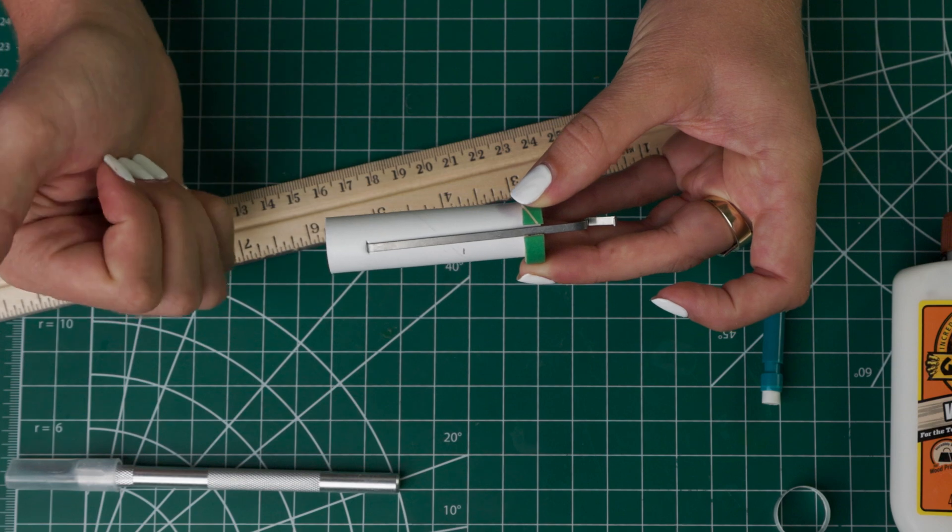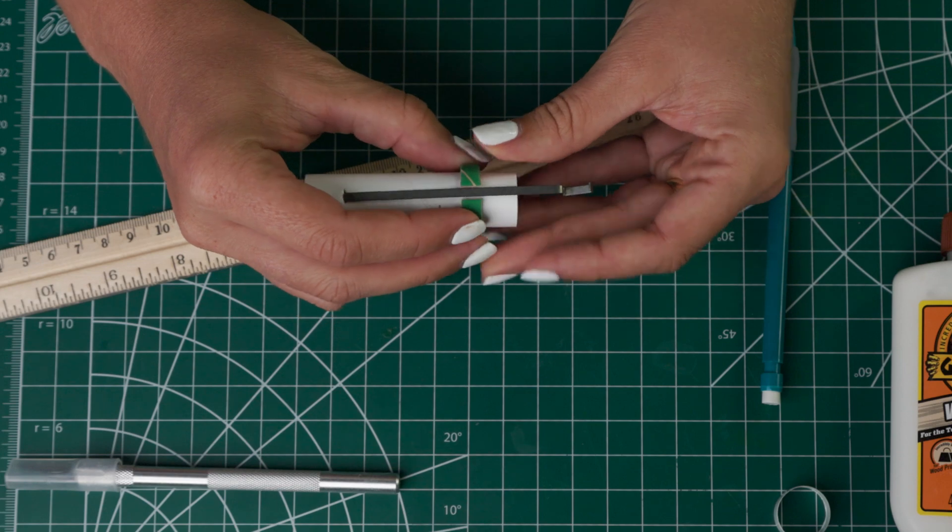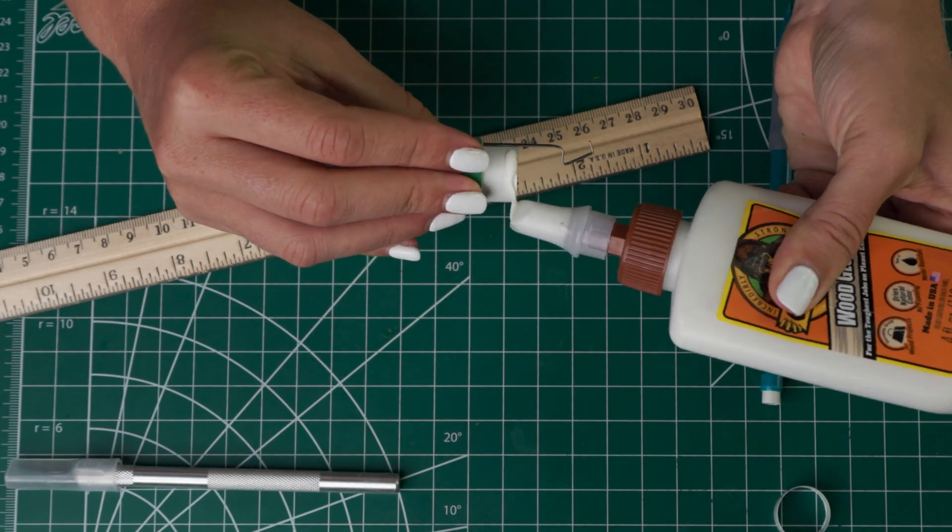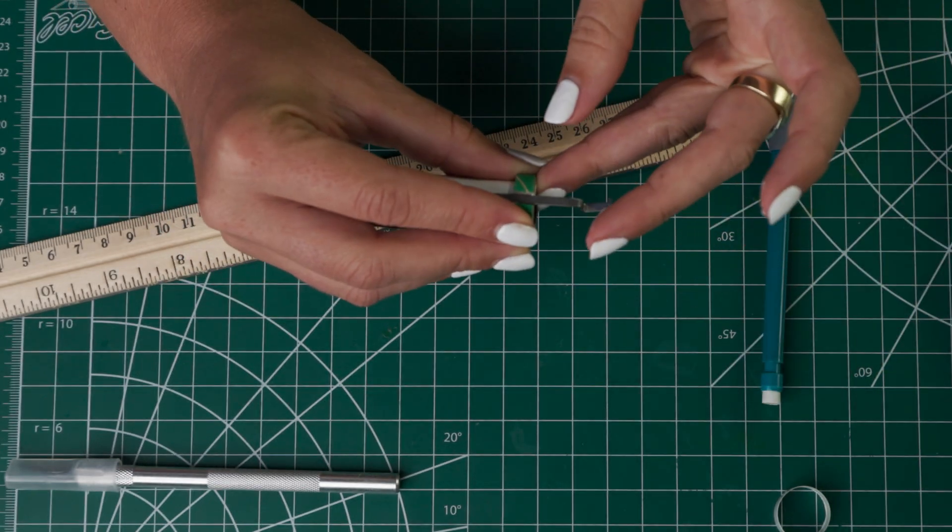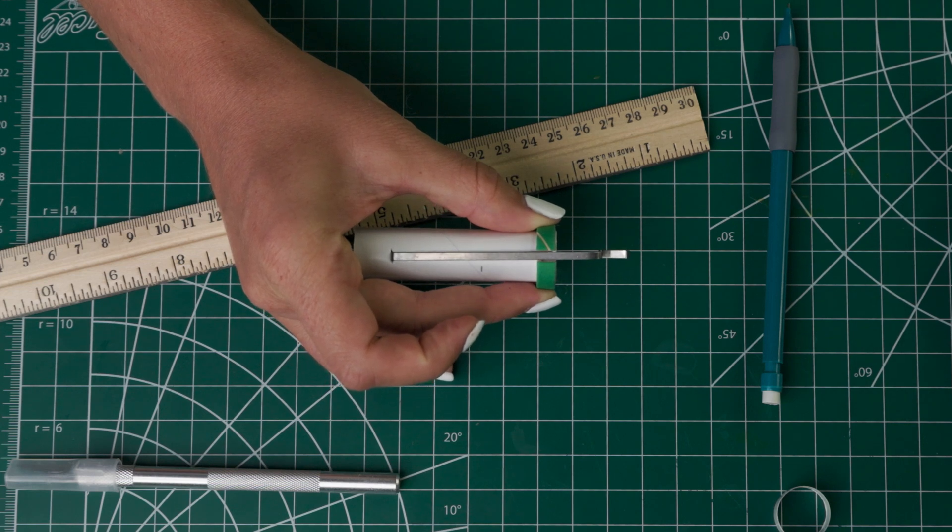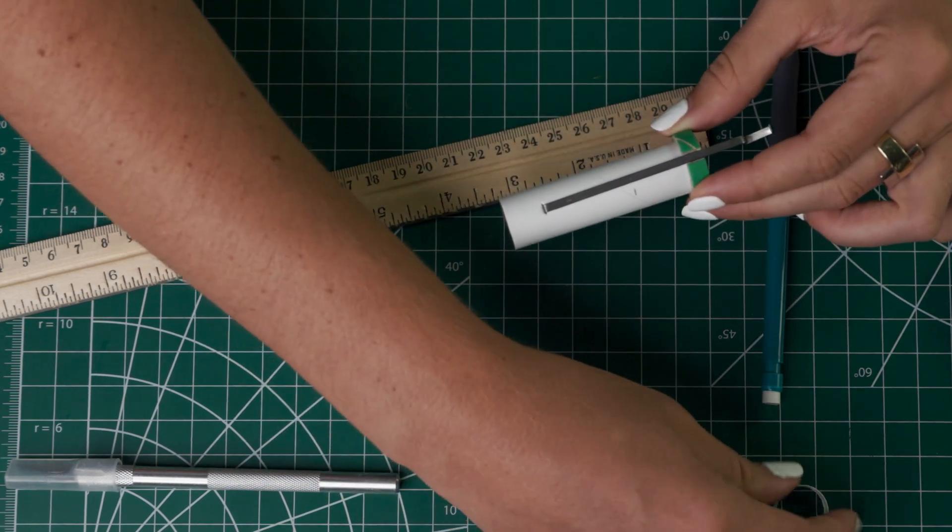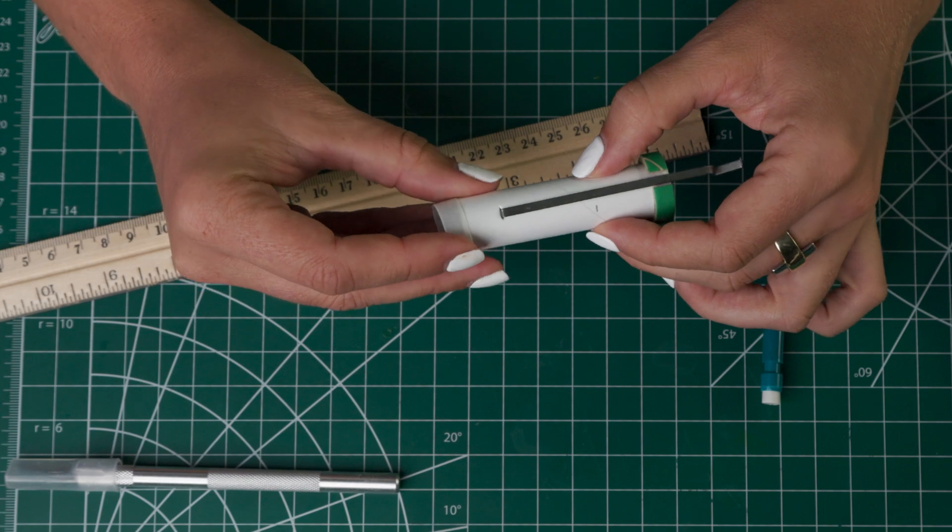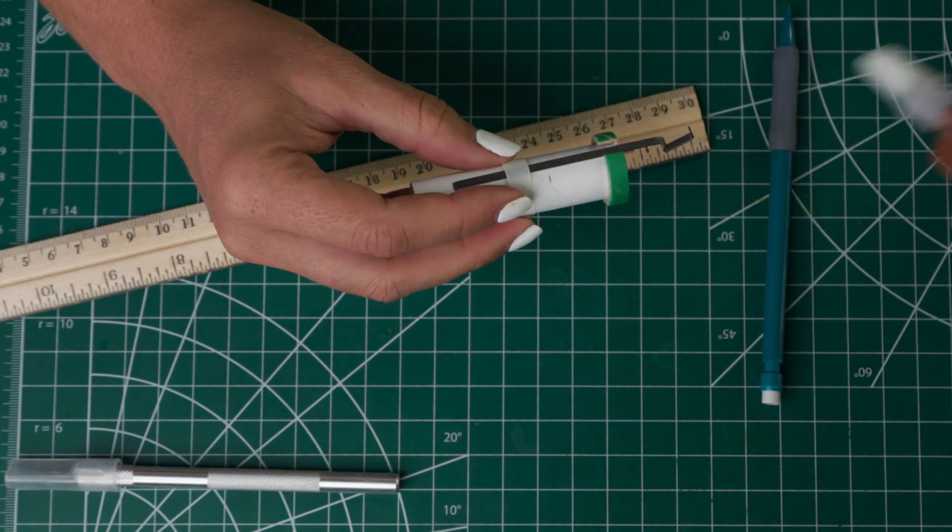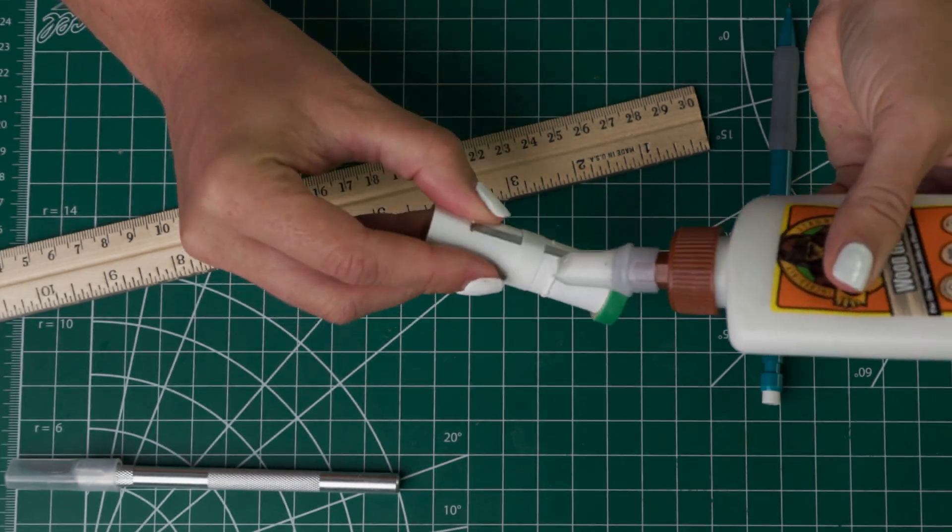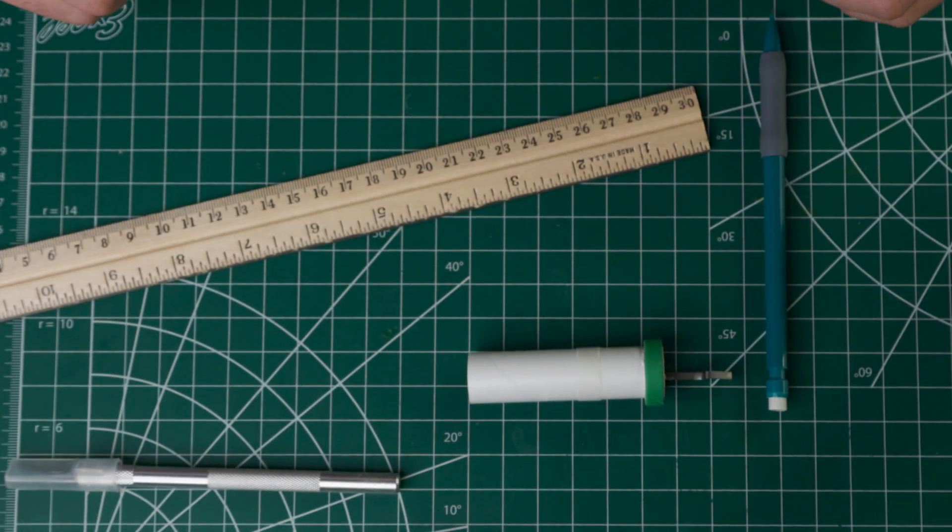Anytime we're gluing things, a couple tips. One is use less glue than you think you're going to need, and two, always test fit a part before you put the glue on. Then you can let that dry for a second. Next we are going to put on the mylar retaining ring and it's going to go down to that one inch mark that you made. So take your clear ring, just like before, test fit it on before you add glue. It's going to go down to that one inch mark. Then we are going to go ahead and just let that dry.